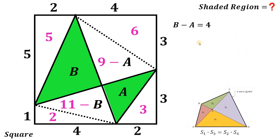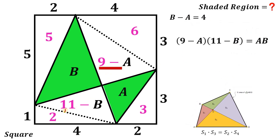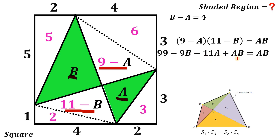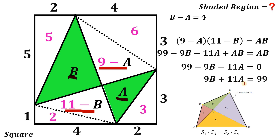Applying this concept, we get: (9 minus A) times (11 minus B) equals A times B. Expanding the left-hand side gives 99 minus 9B minus 11A plus AB equals AB. Subtracting AB from both sides gives 99 minus 9B minus 11A equals 0. Rearranging, we have 9B plus 11A equals 99. This is our second equation containing A and B.